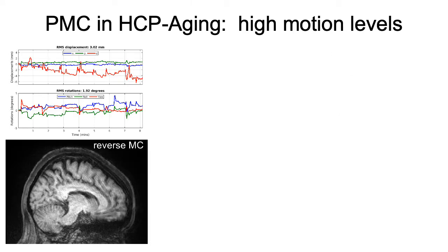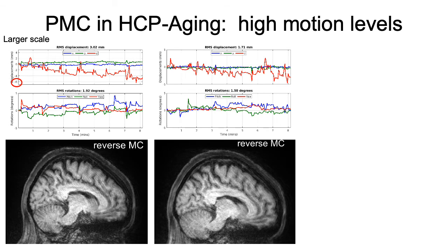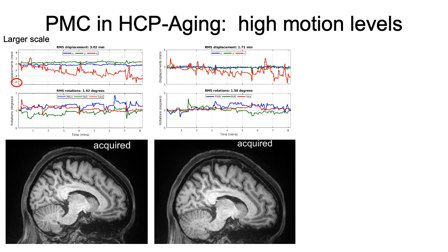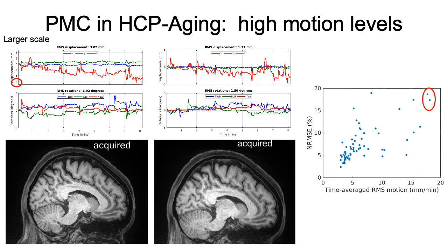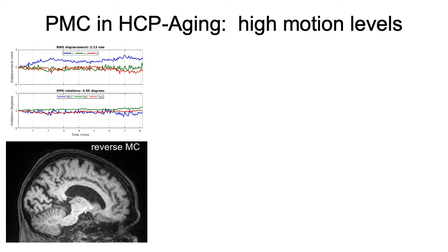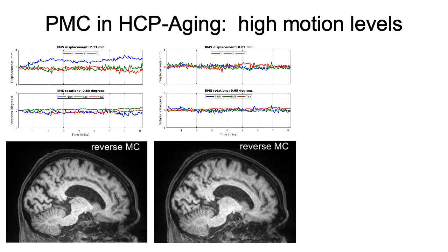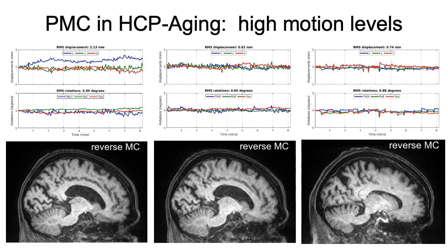This is the scan with the most motion we saw — note the scale is increased relative to the others. The acquired image has some artifacts, but the reverse motion corrected image is significantly worse. In the repeated scan of the same subject, there are some artifacts in the acquired image, but the image without PMC looks substantially worse. In scans where the subject was moving almost constantly, the acquired image has some residual artifacts but the contrast is generally good and represents a clear improvement over the reverse motion corrected image.